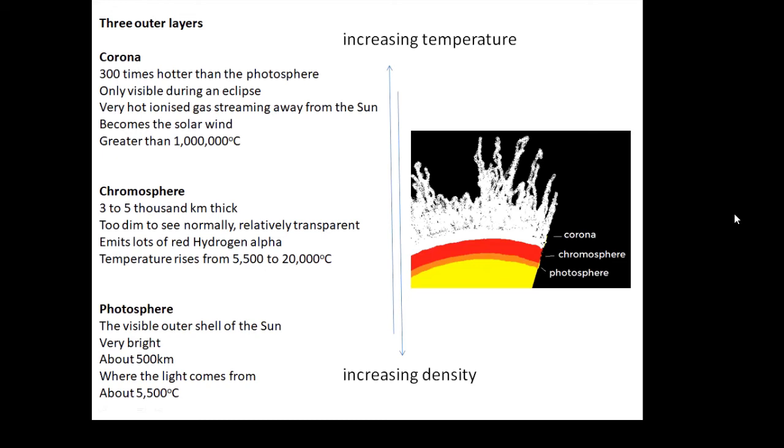The surface of the Sun, the visible outer shell, is the photosphere - the sphere of light. It's very bright, about 500 kilometers thick. It's where the light we see from the Sun comes from. The surface temperature is about 5,500 degrees centigrade. Of these three layers, the photosphere is the coolest and the densest.